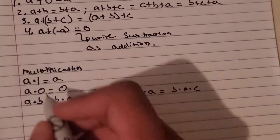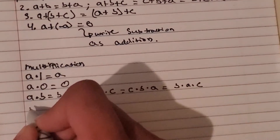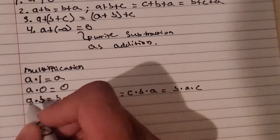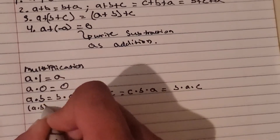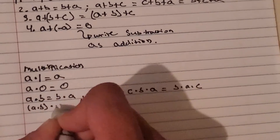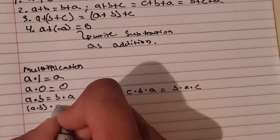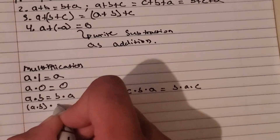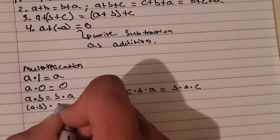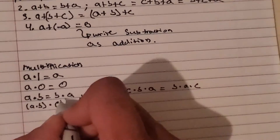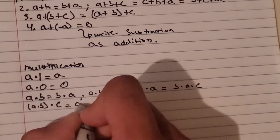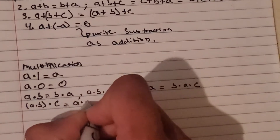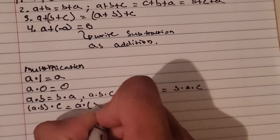And if we have grouping symbols — so if we have A times B with grouping symbols — and we multiply that quantity by C, it'd be the same as A times the quantity of B times C.